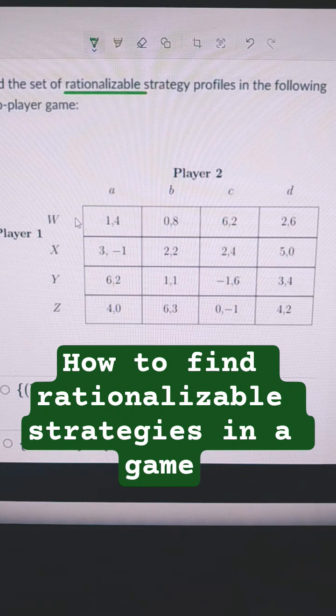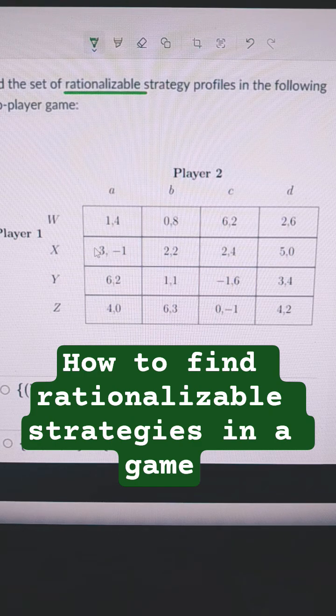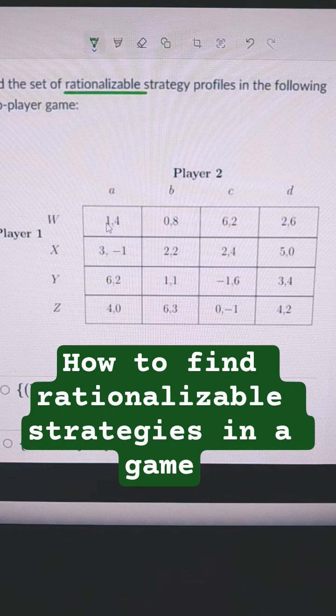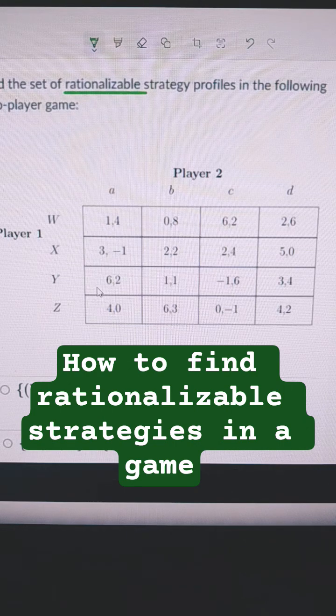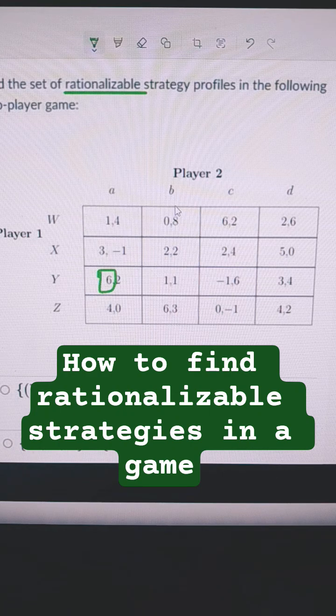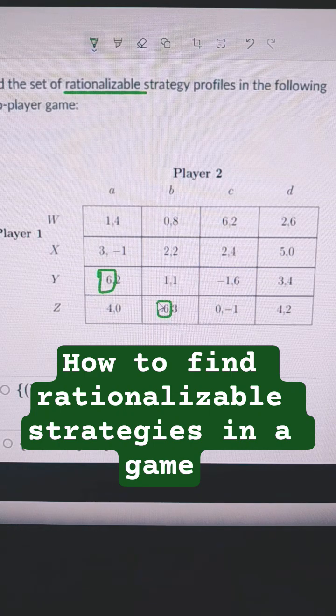Those are not in play in this game. So if player two does A, what's best for player one to get: 1, 3, 6, or 4? Well, it's best to get 6. We're going to circle that. Now if player two does B, we're looking for the best payout for player one. We're going to circle this.